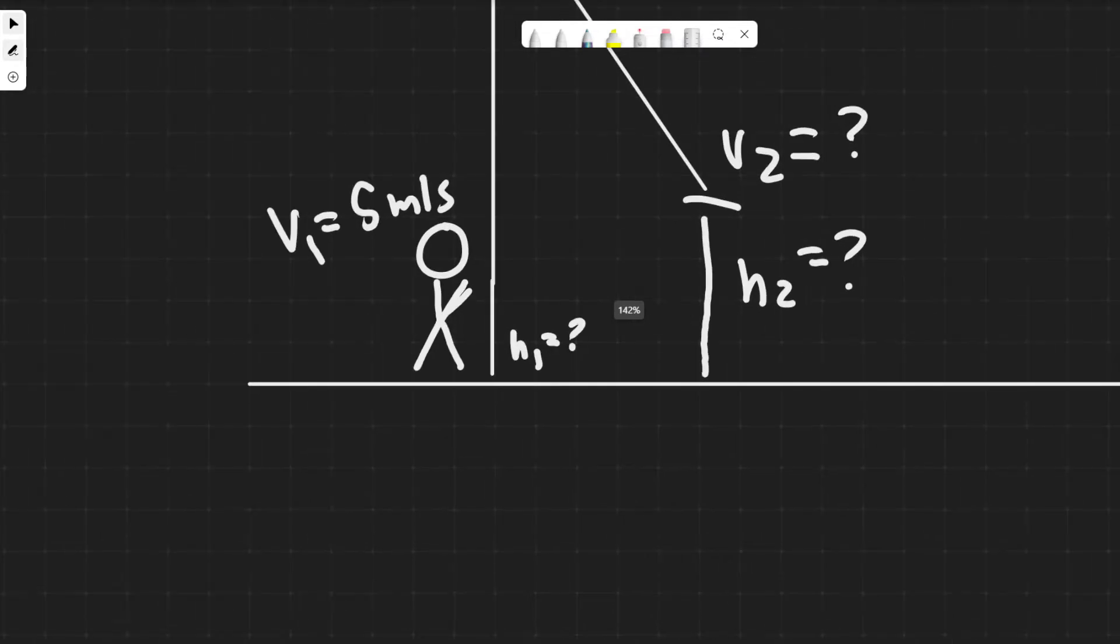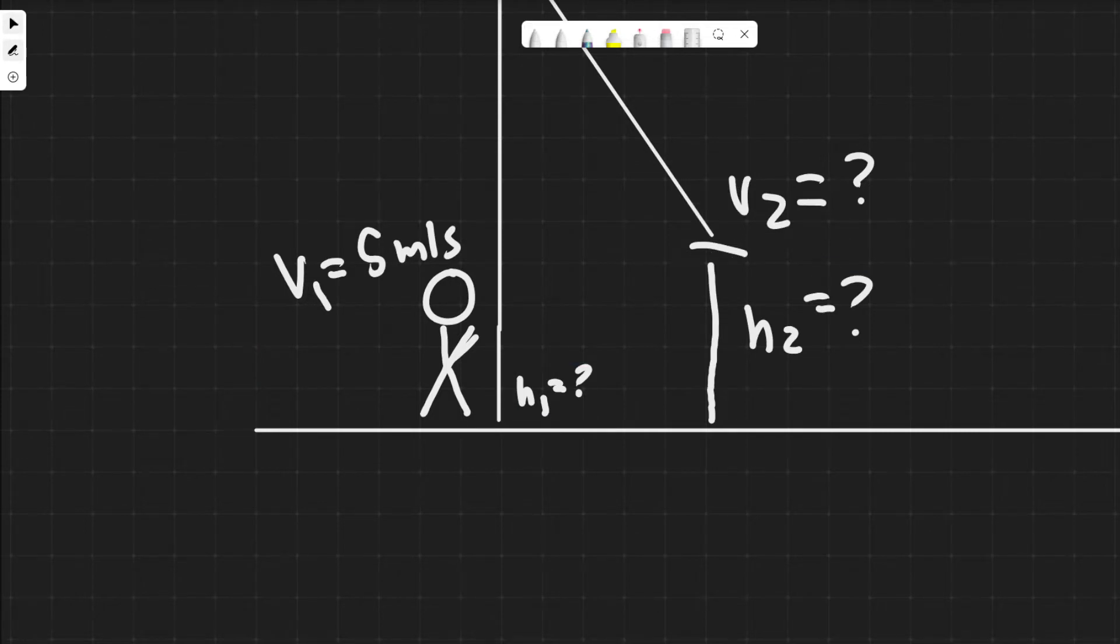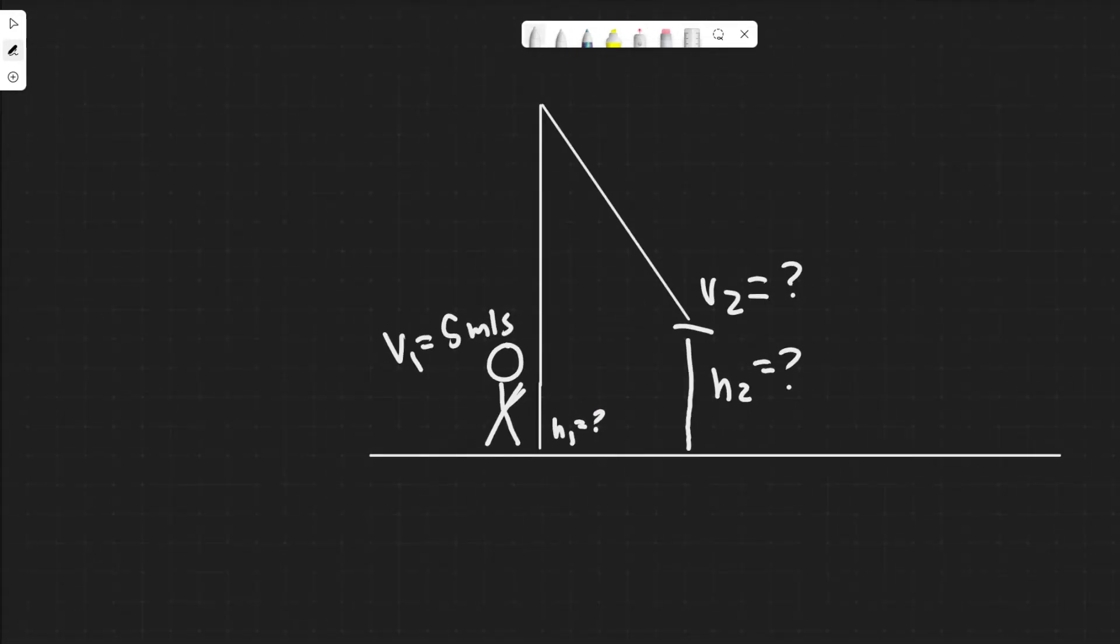First thing you want to do is draw what's going on and understand what's happening. Basically we have Jane here and she's going to be grabbing this vine at this speed. Then she's going to swing like this and come up here with some speed and some height. We're trying to find how high she's going to swing - her height off the ground. She could swing here or here, we don't actually know, but we're trying to find out what that is.